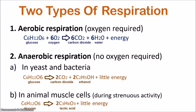In anaerobic respiration, no oxygen is required, and there are two types. The first type occurs in yeast and bacteria: glucose is broken down in the absence of oxygen into carbon dioxide and ethanol, with a little bit of energy produced. Ethanol is an alcohol, so this type of anaerobic respiration is sometimes referred to as alcoholic fermentation.